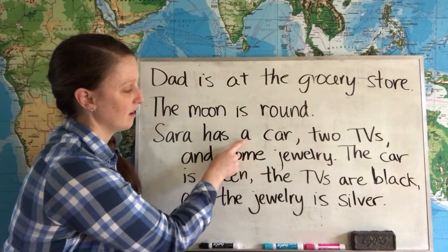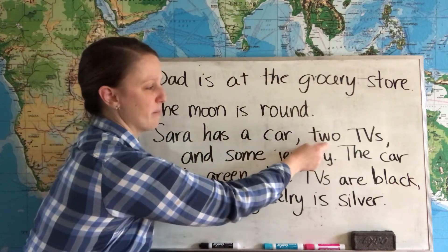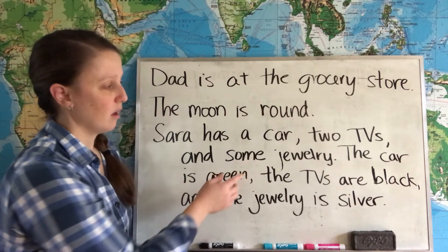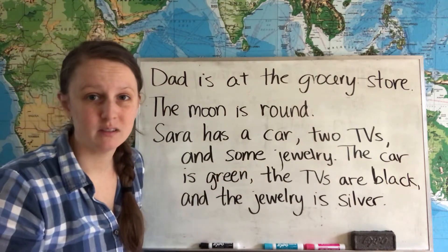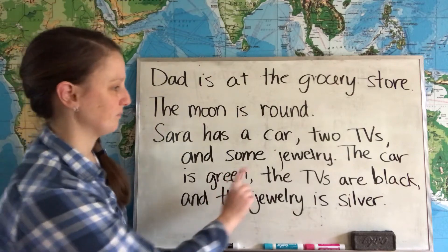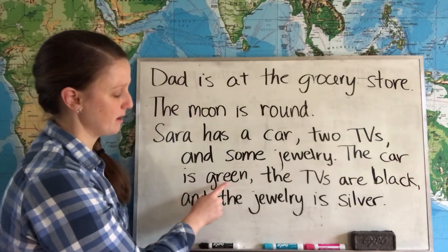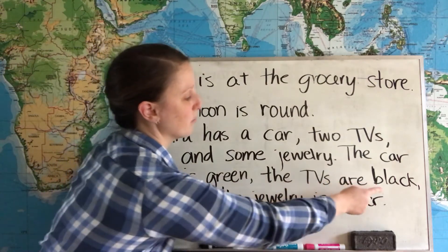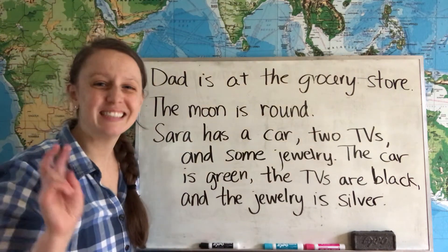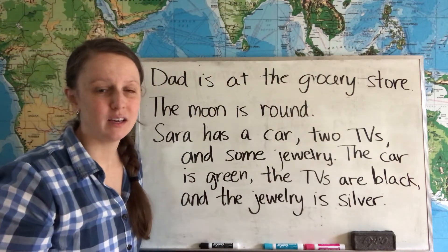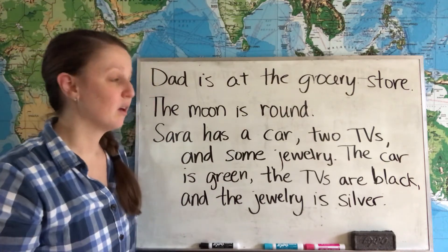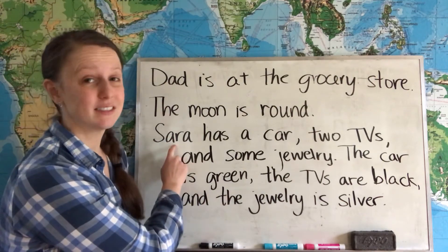Notice we see the article 'a,' the number two, and the determiner 'some' together with our nouns. We're introducing these nouns for the first time. Now let's look at the second sentence. The car is green, the TVs are black, and the jewelry is silver. This is the second time we're talking about these things, so we know which ones we're talking about — specifically Sarah's things.